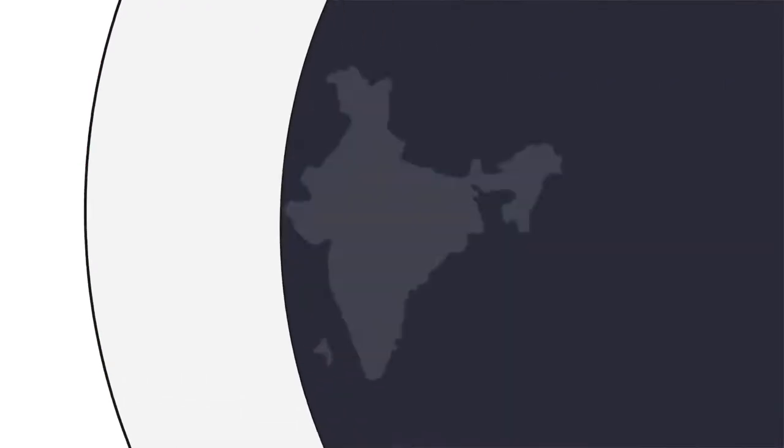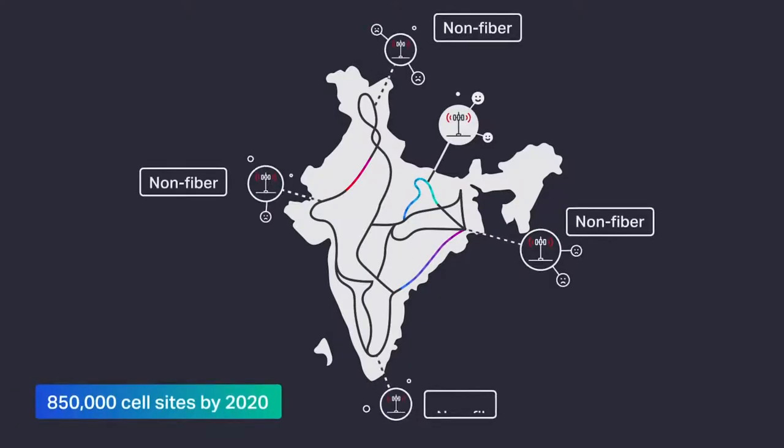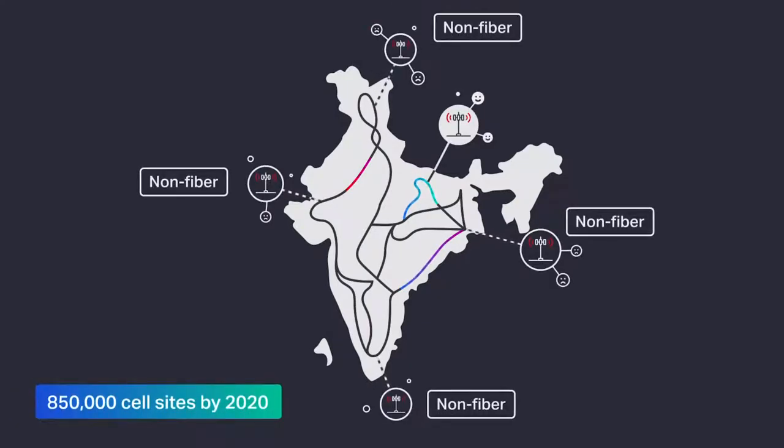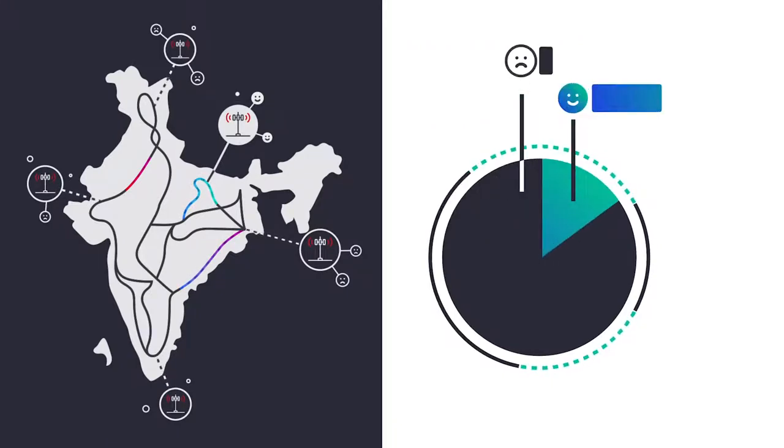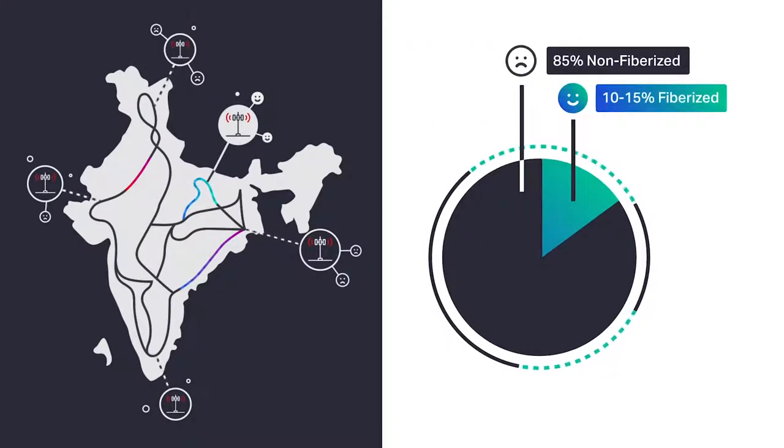Let me give you a few statistics from an India perspective. India is expected to have 850,000 cell sites by 2020. Currently, only about 10-15% of the existing cell sites are fiberized.